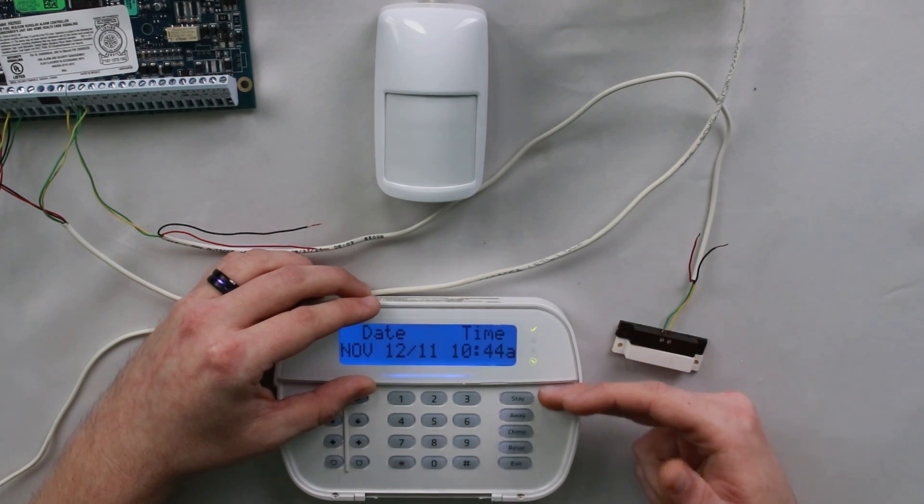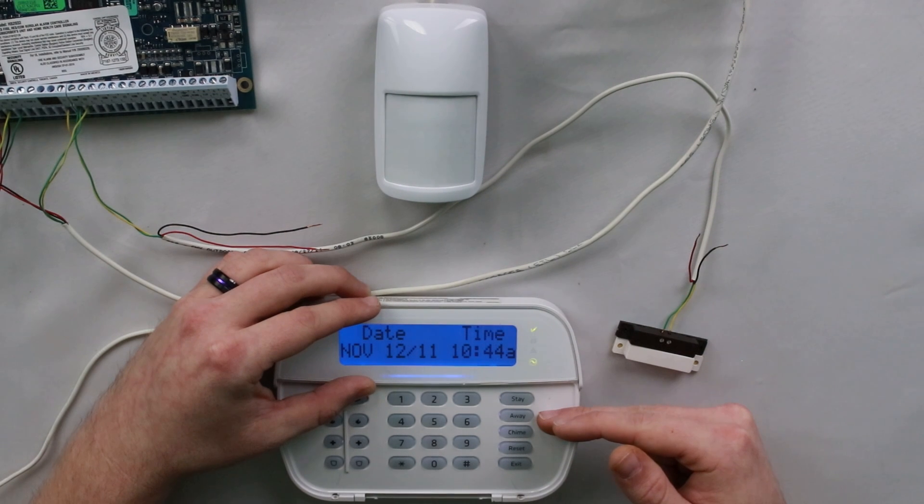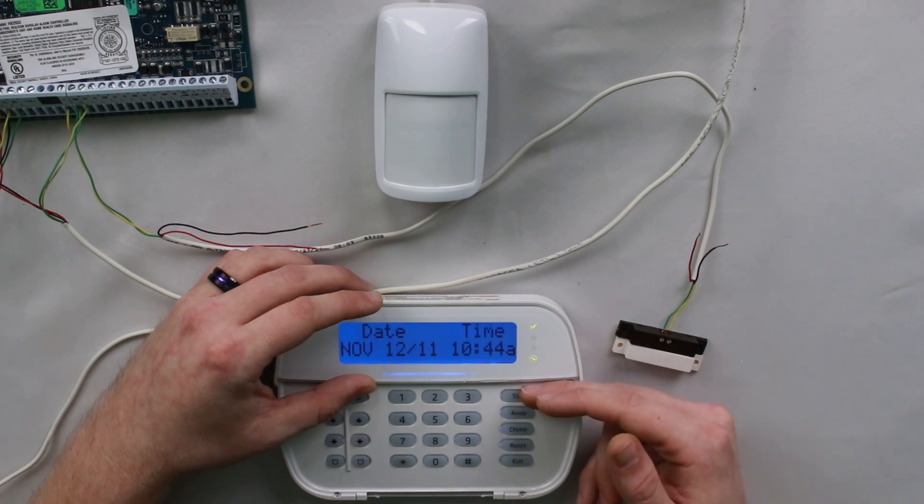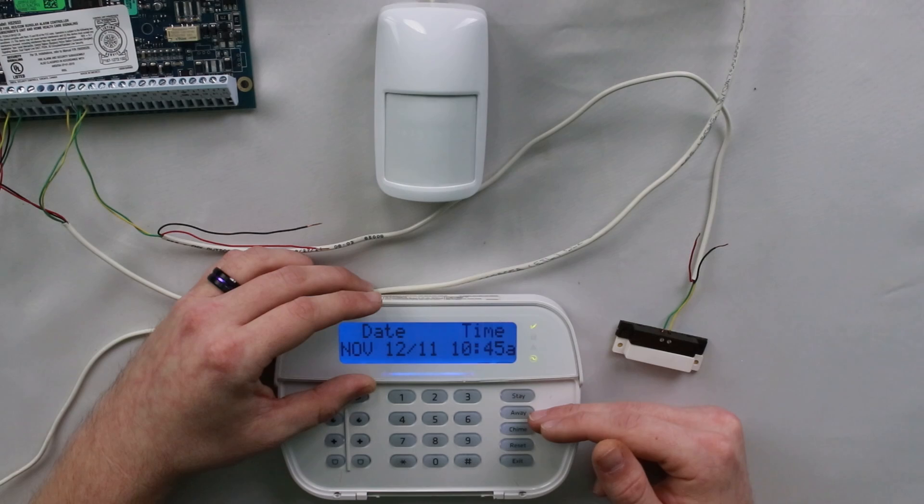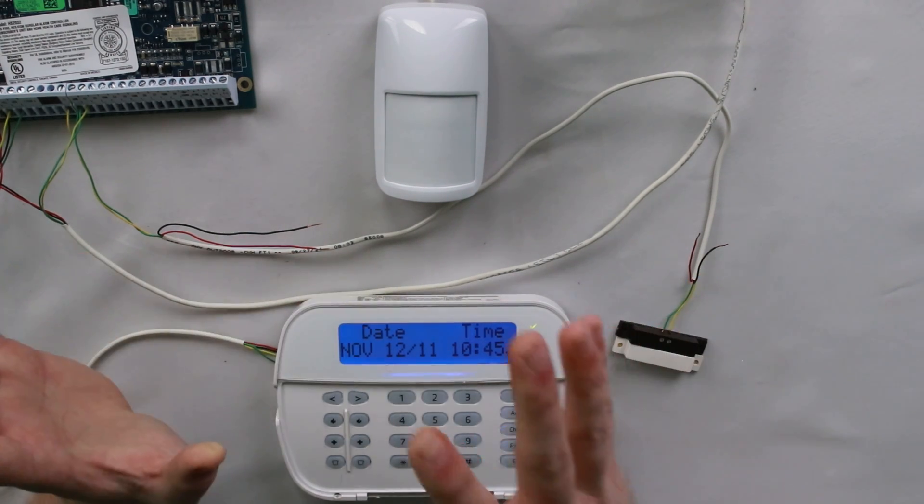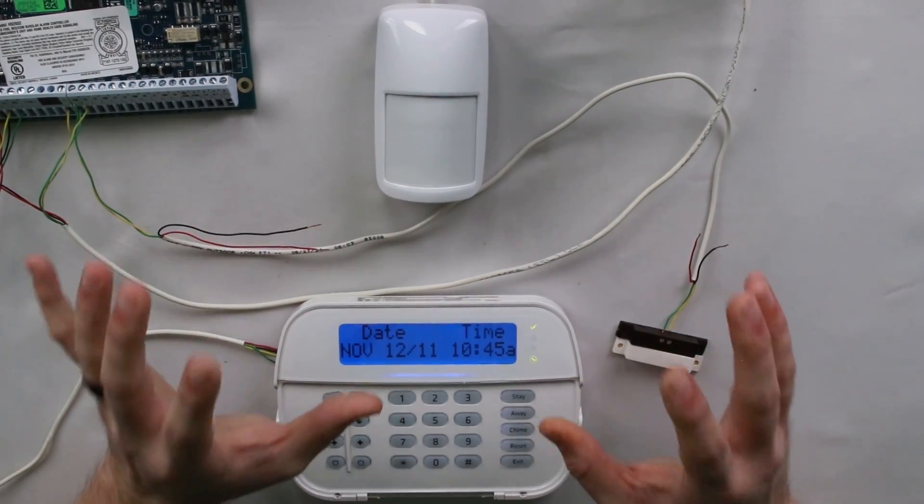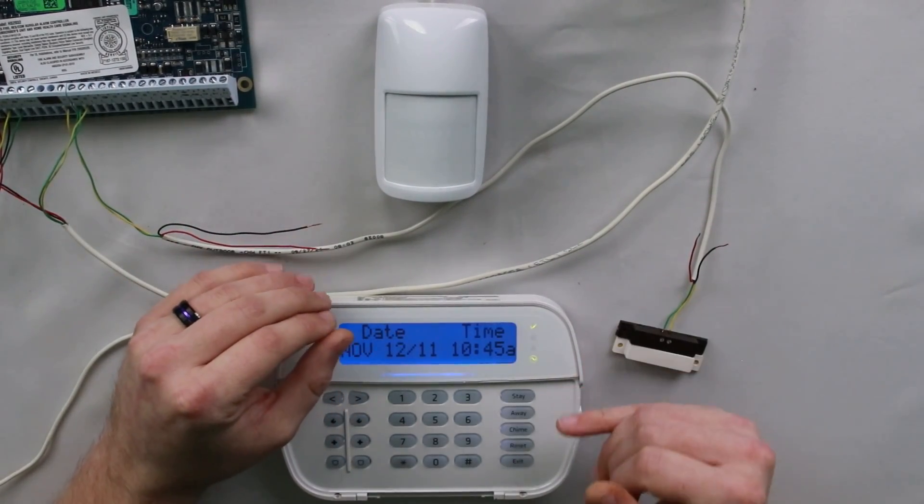Now, you also have a stay and away function key over here on the right. Now, these don't change anything about the way that it arms. If you hold the stay button, that doesn't guarantee it's going to arm in stay mode. If you hold the away button, it doesn't guarantee the system's going to arm in away mode. The coding determining whether or not the system arms in stay or away is still always present, even if you hit a specific button.